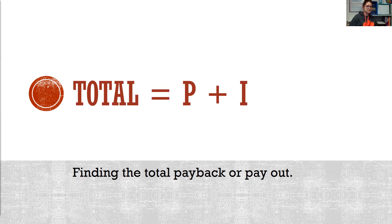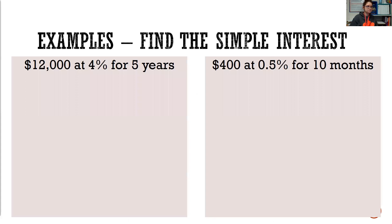Let's just jump in with some examples. First example, find the simple interest. So remember our formula that simple interest is I equals P times R times T. For this one, we're looking for our interest. So we're going to say that P, our principal, $12,000. We're investing at a 4% rate.